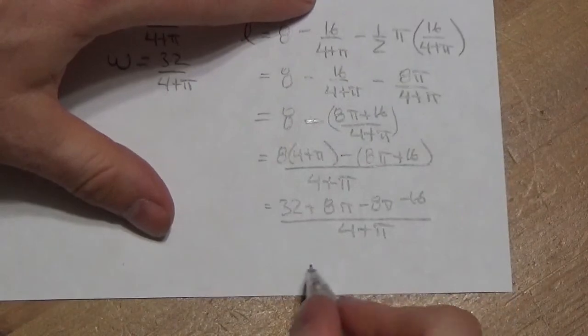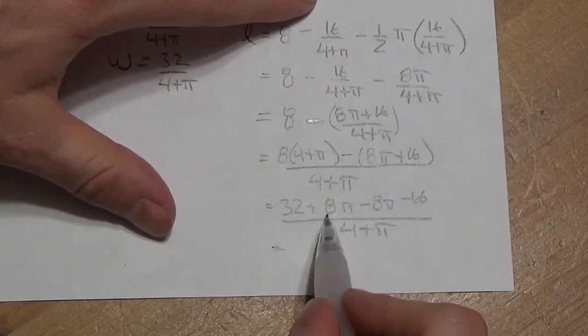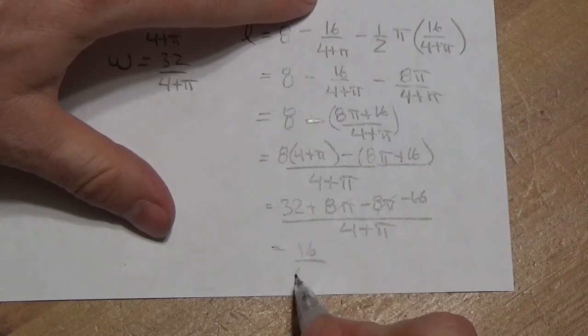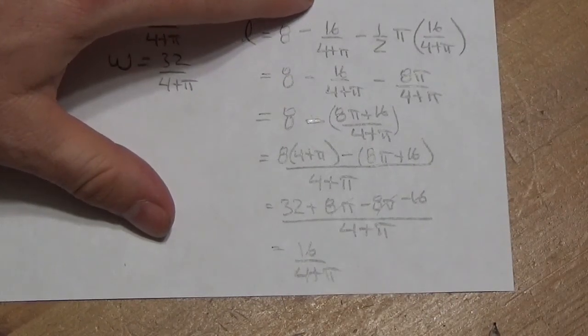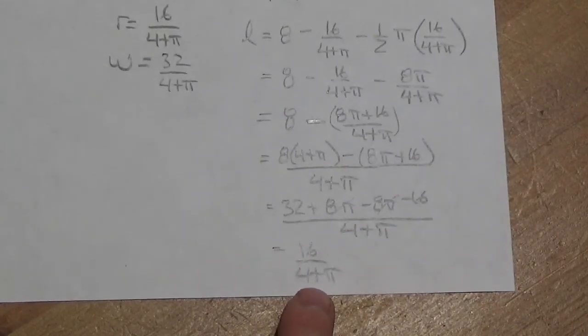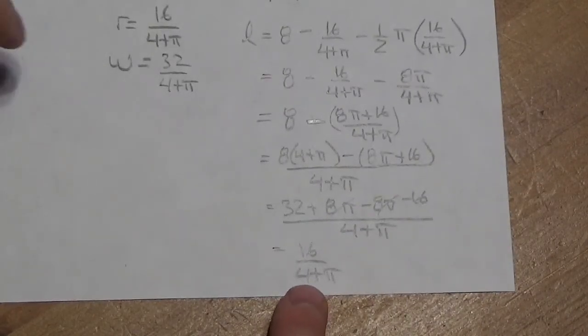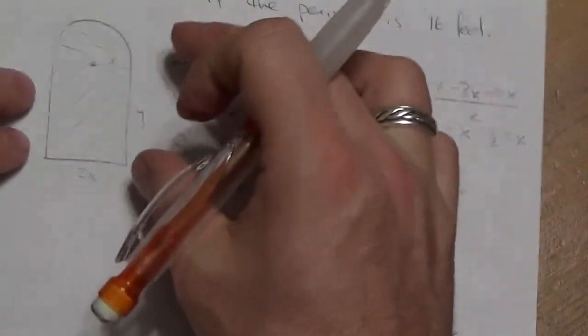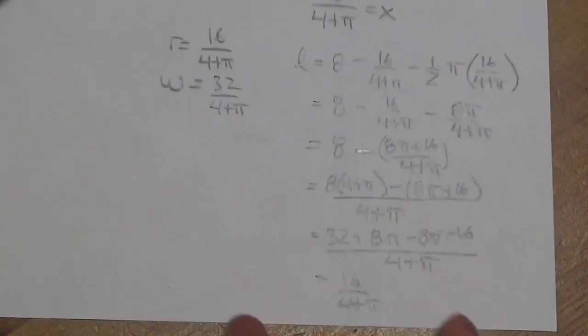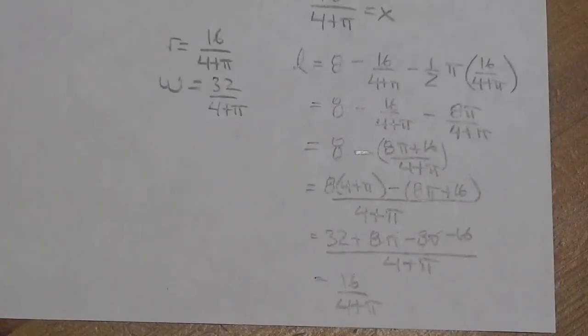And you can see right away, we're getting right near the end here. 8π minus 8π cancels. 32 minus 16 is going to be 16 over 4 plus π. So, now take a look at that. Isn't that interesting how that worked? Okay? Where the length is going to be equal to the radius. Really, really interesting result. I hope that makes sense.